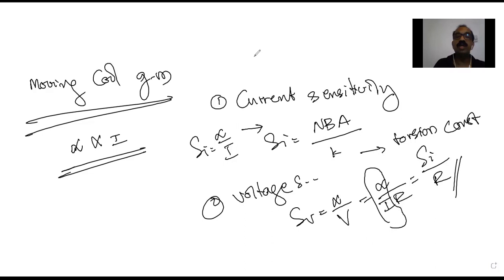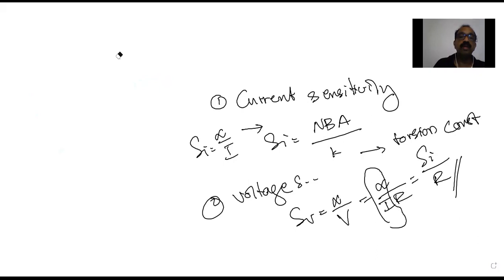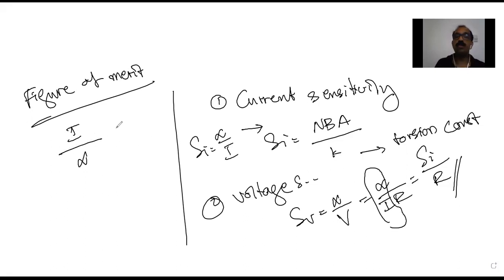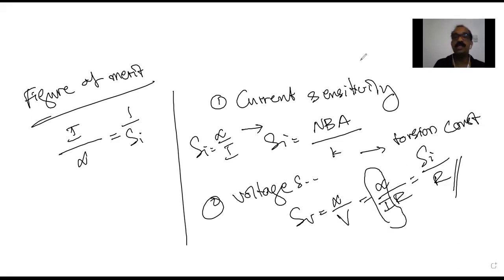A third term related to the moving coil galvanometer is the figure of merit, which is the current required to produce unit deflection. It is the reciprocal of current sensitivity. So current sensitivity, voltage sensitivity, and figure of merit are the three terms associated with the moving coil galvanometer. The galvanometer cannot directly be used as an ammeter or voltmeter, but it can be converted.